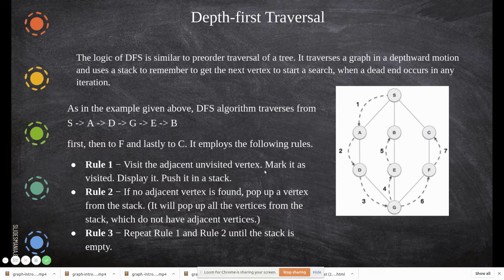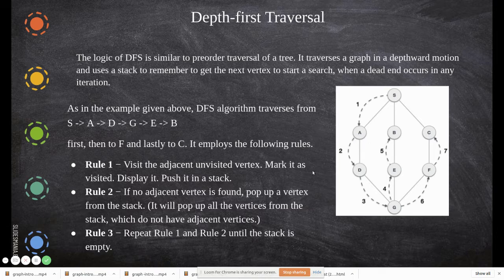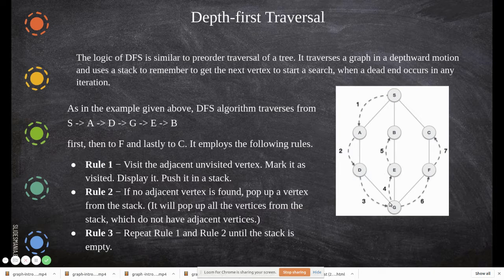First, visit the adjacent unvisited vertex. If you have not been through a vertex yet, it is called an unvisited vertex. For example, you first print a node, then push its adjacent vertices — say A, B, C — into the stack, then pop the topmost element and push its neighbors. When you pop an element, it means it is visited. So you pop D, push G; pop G, push its neighbors E and F; pop E and so on.